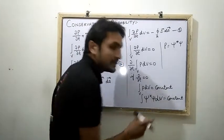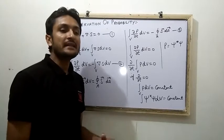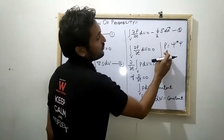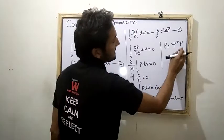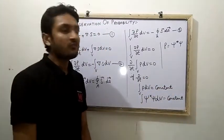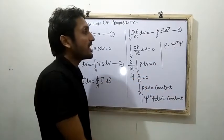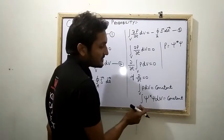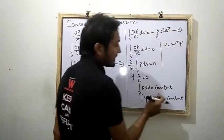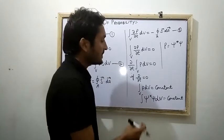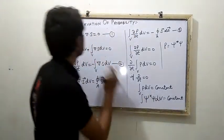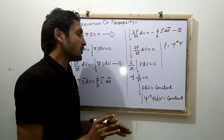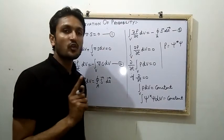This equation states that the probability of finding the particle is always 100%, where p is the probability. We know that p dv equals psi times psi-star, where psi is the wave function and psi-star is its complex conjugate. This is also known as the normalized wave function equation, and it expresses conservation of probability — the probability of finding the particle is always equal to one.